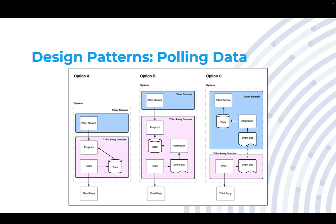It's not always an option to have our third-party service call into our own system. A very common case is you end up with some type of third-party endpoint which you're going to have to pull. The next option for receiving data is the polling option. This means at some interval you're going to hit this endpoint, try to figure out the information, and then figure out how to store it.